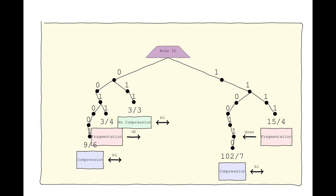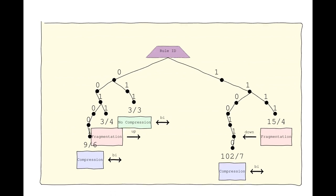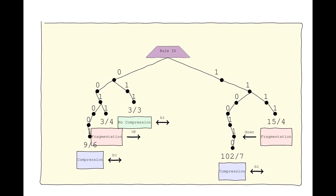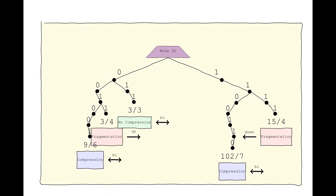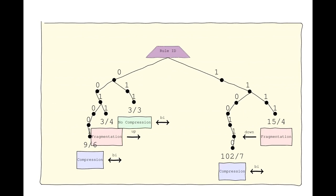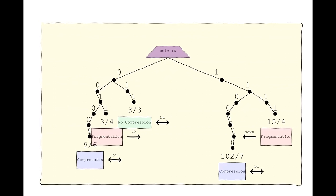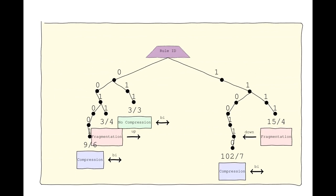However, for fragmentation rules, a specific direction must be assigned. Therefore, to fragment traffic in both directions, at least two fragmentation rules must be defined, one for uplink and one for downlink.